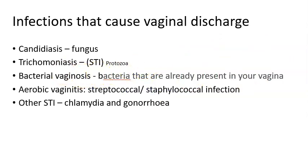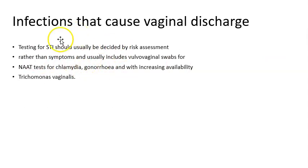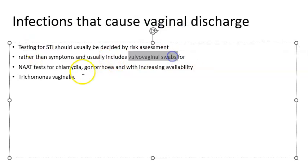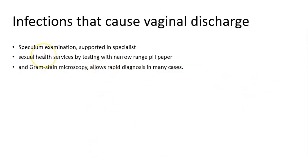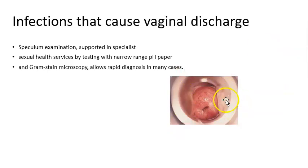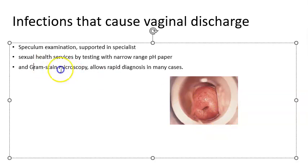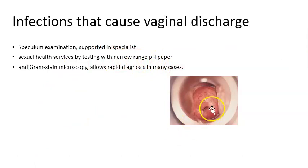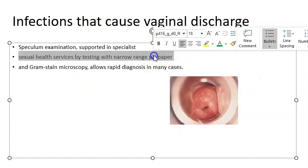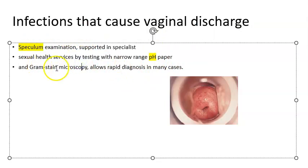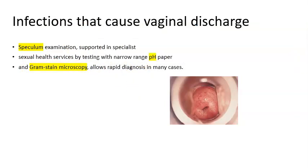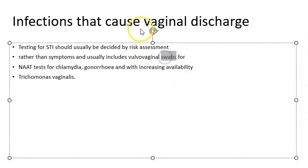For diagnosis, you should take vulvovaginal swabs and rule out STIs — chlamydia, gonorrhea, and Trichomonas vaginalis. On speculum examination, check vaginal pH. Under the microscope with appropriate staining, you can identify the organisms. A swab is taken for microbiological analysis.